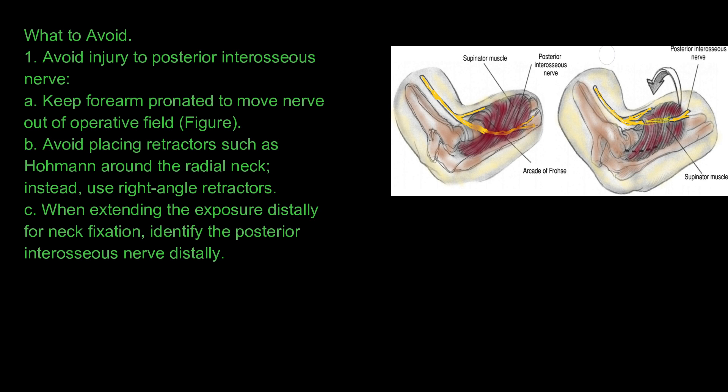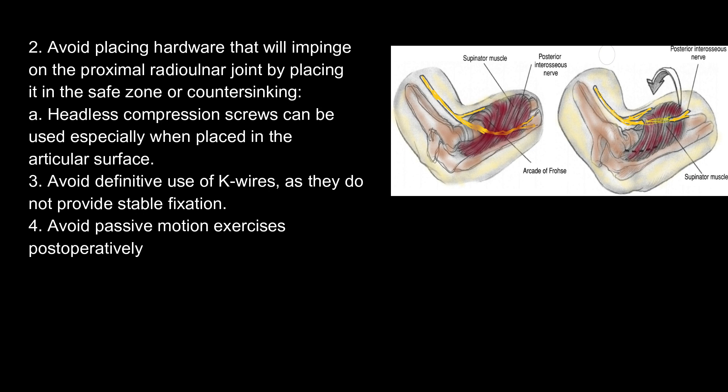What to avoid: 1. Avoid injury to the posterior interosseous nerve: keep the forearm pronated to move the nerve out of the operative field; avoid placing retractors such as a Hohmann around the radial neck — instead use right-angle retractors; and when extending the exposure distally for neck fixation, identify the posterior interosseous nerve distally. 2. Avoid placing hardware that will impinge on the proximal radial ulnar joint by placing it in the safe zone or counter-sinking. Headless compression screws can be used, especially when placed in the articular surface. 3. Avoid the definitive use of K-wires, as they do not provide stable fixation. 4. Avoid passive motion exercises postoperatively.